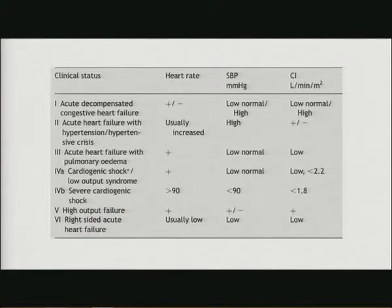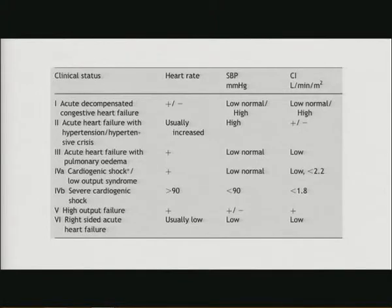Some of the subtypes we can have in an acute heart failure situation include: acute decompensated congestive heart failure, hypertensive crisis, pulmonary edema, cardiogenic shock with low cardiac output, severe cardiogenic shock, high output failure, and involvement of the right side. We are being more informed about right-sided heart failure and seeing more patients with this presentation.